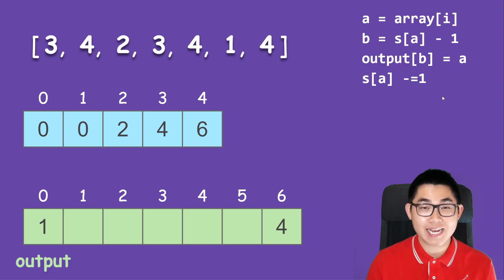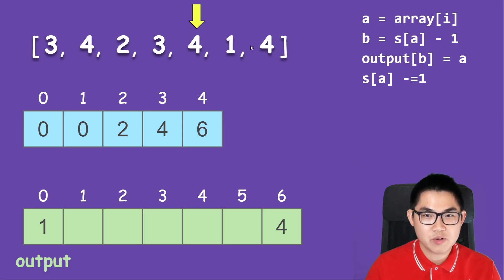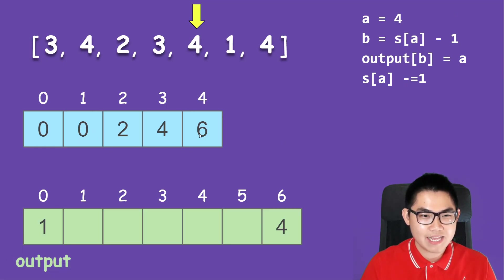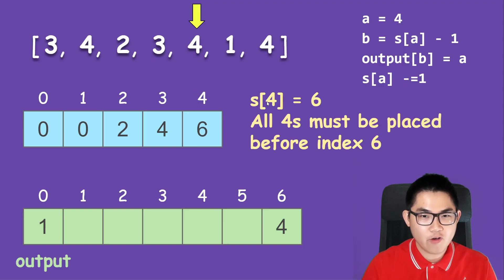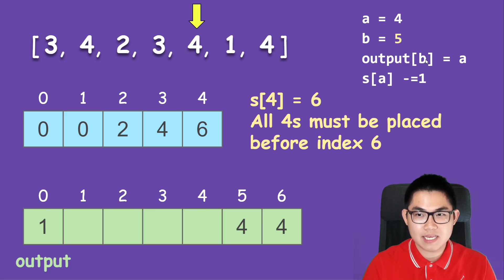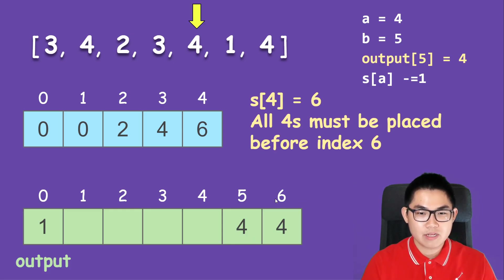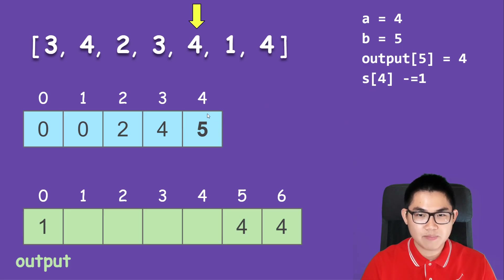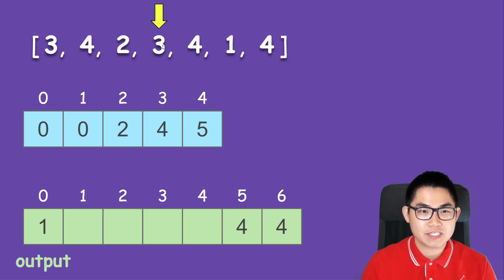The next number is four. S4 now equals six, meaning all fours must be placed before index six, so we put the four at index five — that's S[4] minus one equals five, so output[5] equals four. Then we decrement: six becomes five. The next number is three: S3 equals four, meaning all threes must be placed before index four, so we put it at index three, then decrement the prefix sum.